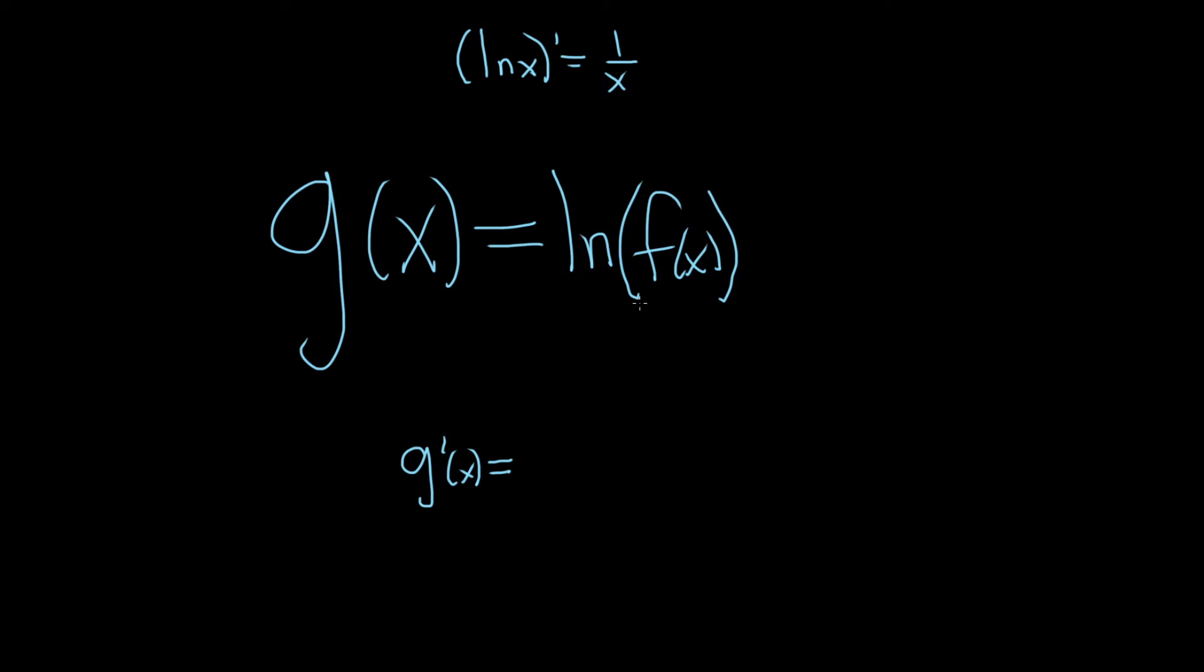The chain rule says that when you have a function of a function, you have to identify your outside and your inside. So this is your outside, and this is your inside.